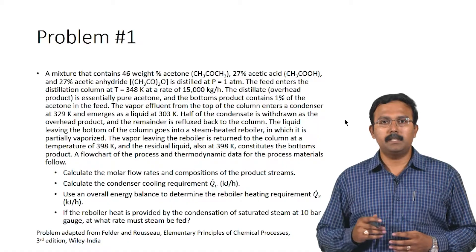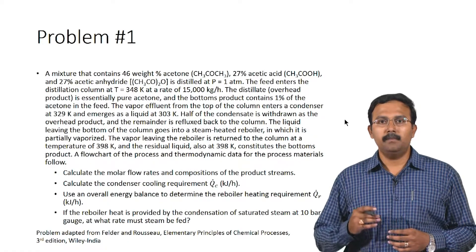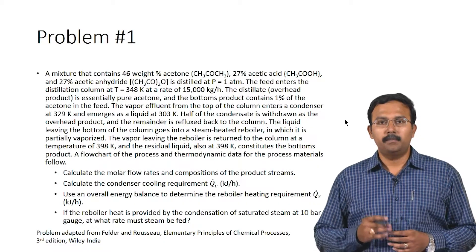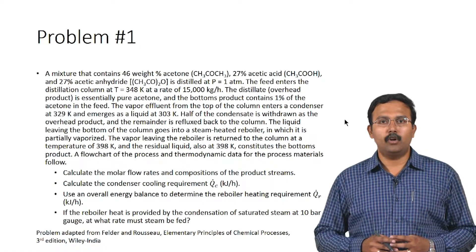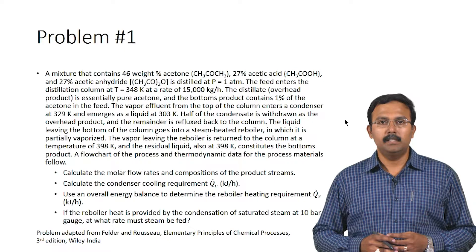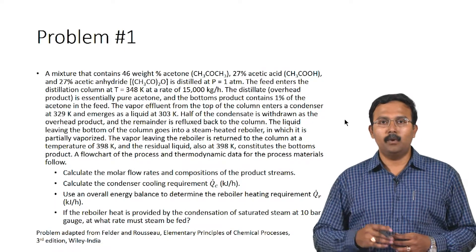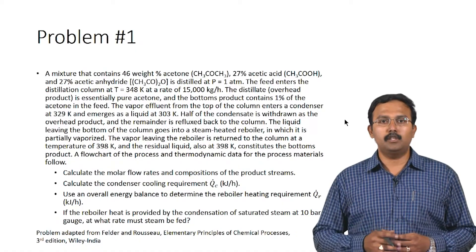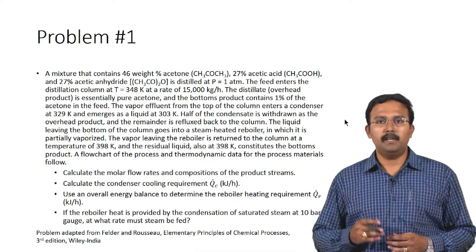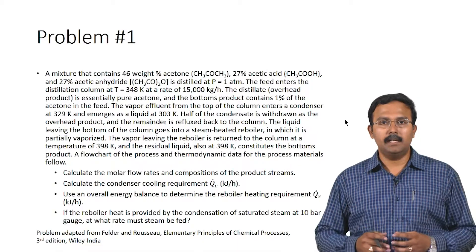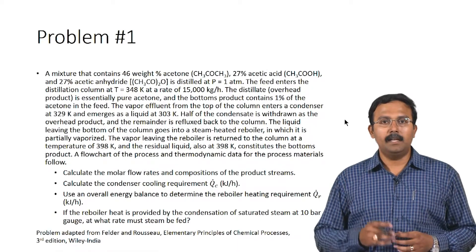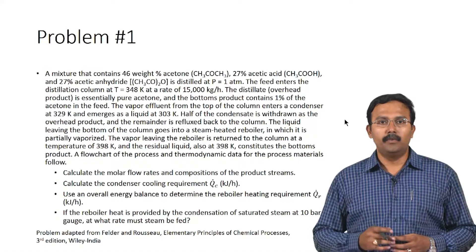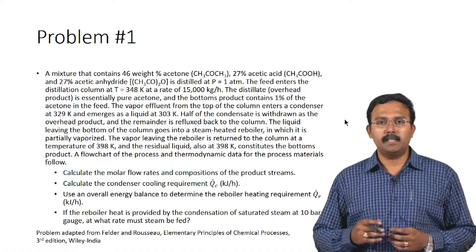A mixture containing 46 weight percent acetone, 27 percent acetic acid, and 27 percent acetic anhydride is distilled at 1 atmosphere. The feed enters the distillation column at 348 Kelvin at a rate of 15,000 kilograms per hour. The distillate is essentially pure acetone, and the bottoms product contains 1 percent of the acetone in the feed. The vapor effluent from the top of the column enters a condenser at 329 Kelvin and emerges as a liquid at 303 Kelvin.